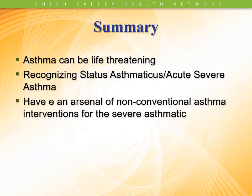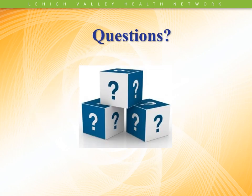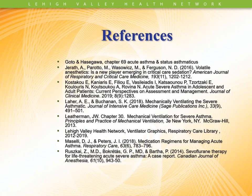Summary: asthma can be life-threatening, recognizing status asthmaticus and acute severe asthma is very important, and have an arsenal of non-conventional asthma interventions for the severe asthmatic. If you have questions, you can always contact me and we can address them. We have a list of references that are available to review additional information.